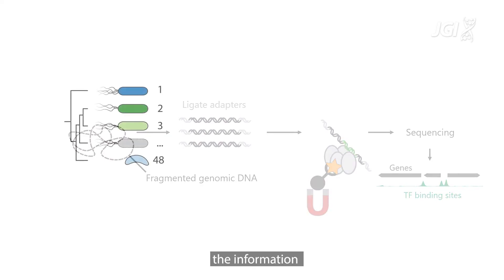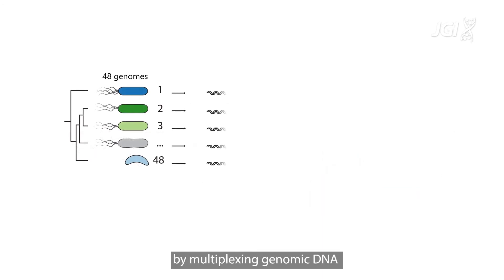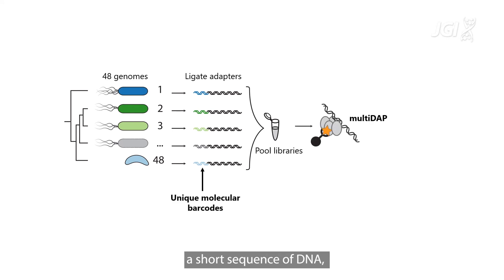Now we can further increase the information gained from each experiment by multiplexing genomic DNA from many different species. We can do this by introducing a unique molecular barcode, a short sequence of DNA, to mark each individual genome.